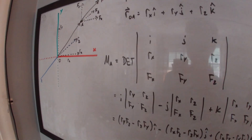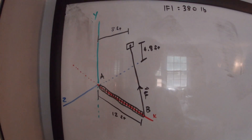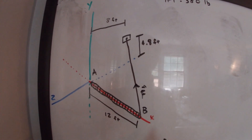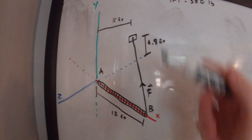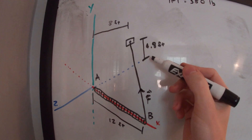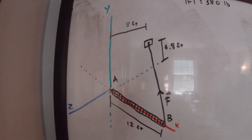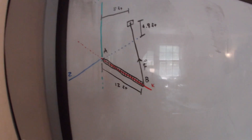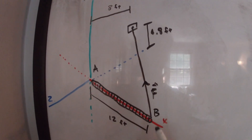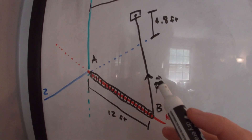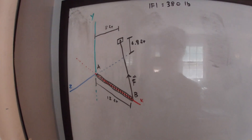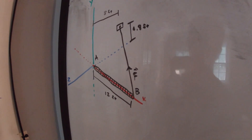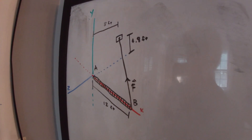It's also very easy to check with a calculator or MATLAB. Here's an example problem to try out this method of taking the moment about a point using a matrix. We have a 12-foot long bar along the x-axis with a cable connected to the end, connected to a point that is 4.8 feet in the plus-y direction and 8 feet in the negative-z direction. It's important to know how to break this force up into components no matter what method you use.